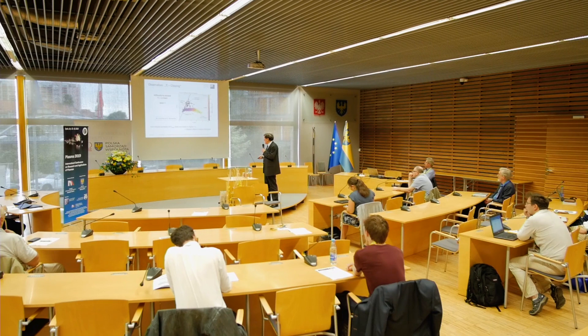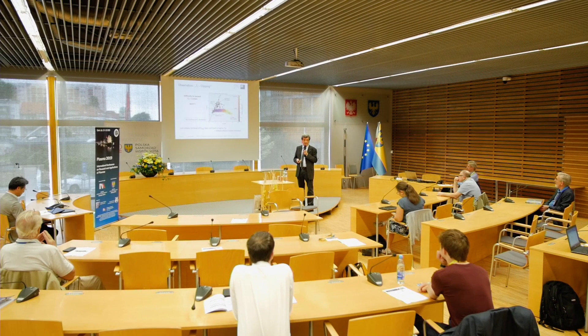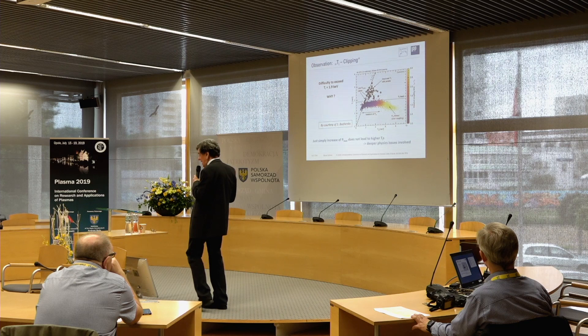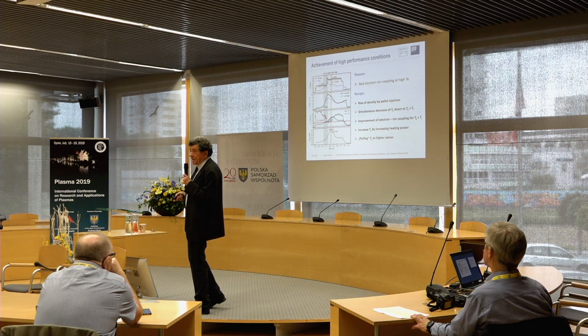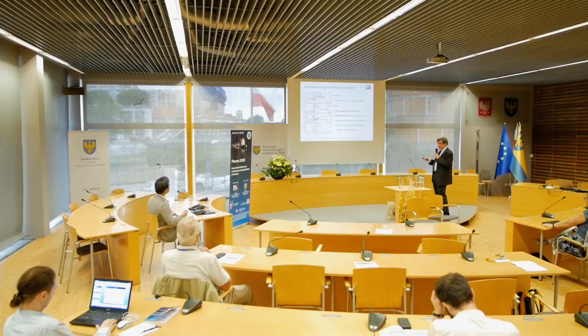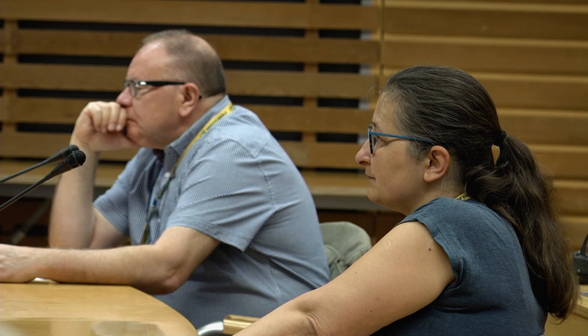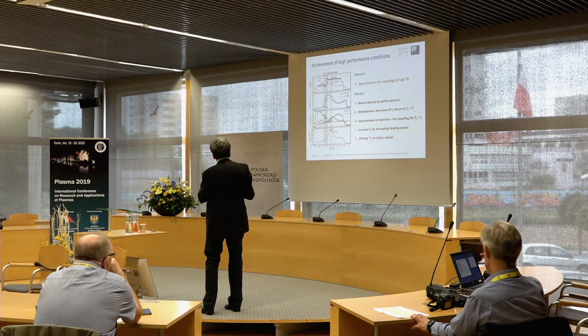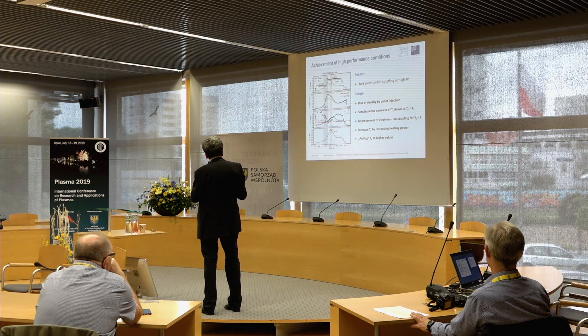Some plasma conditions exceed this limit and we could reach higher ion temperatures. The recipe can be seen in discharges starting with ECRH power at 2.7 megawatt: the density is very low, giving very high electron temperatures and very low ion temperatures. Because of this large difference, the coupling between the two species is poor and we cannot transfer energy from electrons to ions.